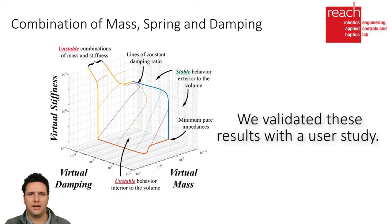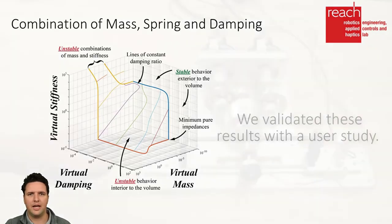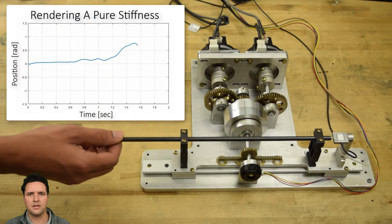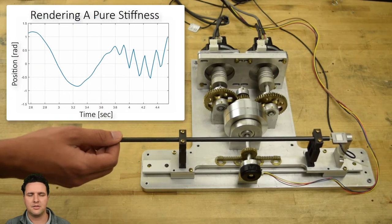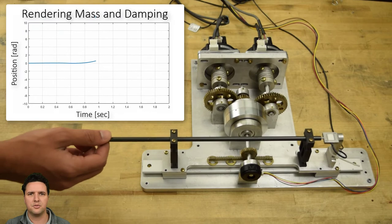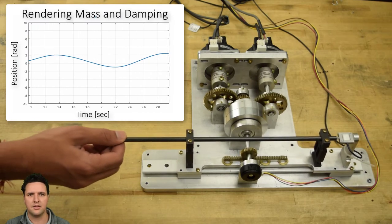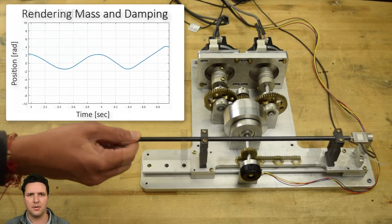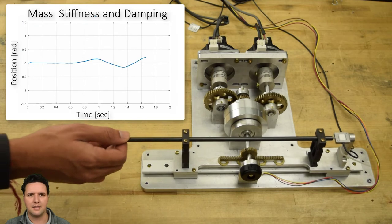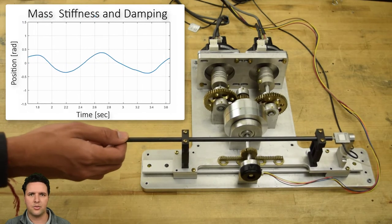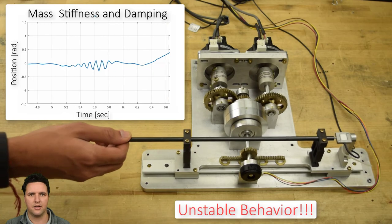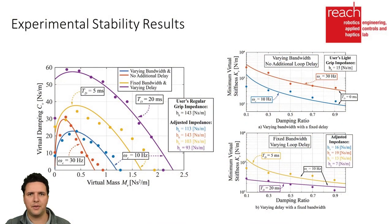We experimentally validated these results with a user study where we asked six participants to interact with a single degree of freedom admittance-based haptic device. Participants interacted with bilateral virtual environments composed of a pure stiffness, combinations of mass and damping, and finally combinations of mass, stiffness, and damping, where we decreased the displayed impedance until unstable behavior occurred. Each user's impedance was estimated via frequency domain methods, and the data was used to generate theoretical stability boundaries, which compare well with the experimental results from our user study.